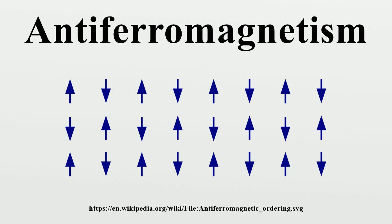Synthetic antiferromagnets are artificial antiferromagnets consisting of two or more thin ferromagnetic layers separated by a non-magnetic layer. Due to dipole coupling, the ferromagnetic layers result in antiparallel alignment of the magnetization of the ferromagnets. Antiferromagnetism plays a crucial role in giant magnetoresistance, as had been discovered in 1988 by Nobel Prize winners Albert Fert and Peter Grünberg using synthetic antiferromagnets.